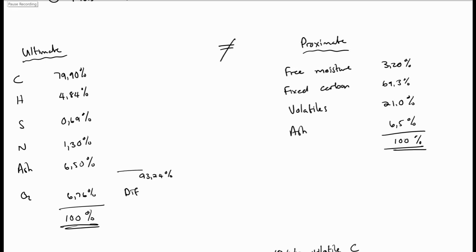Now for this coal of ours, we get the proximate analysis to give us 3.2% free moisture, 69.3% fixed carbon, volatiles of 21.0% and ash of 6.5%. And we can see it is the same sample because the ash is the same for both this analysis.